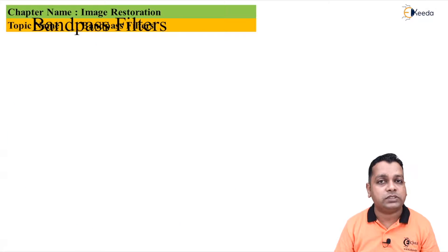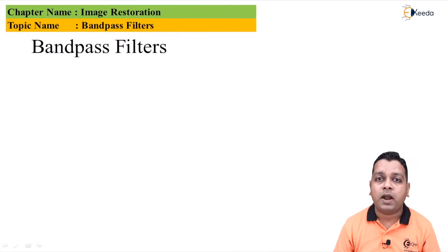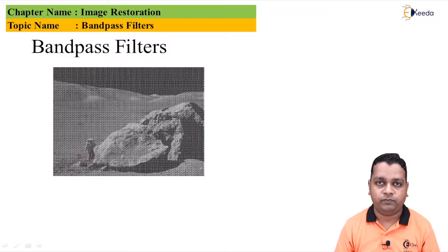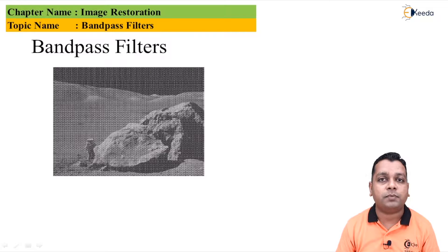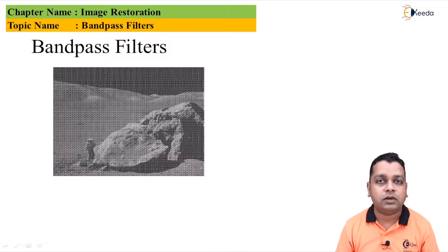However the band pass filtering is quite useful in the isolation of the effect onto the image of the selected frequency bands. Here for band pass filters we have the example. In the previous lecture we have addressed this image. This is the image that has been affected because of the periodic type of the noise. Throughout this image you can see a similar kind of the noise pattern with respect to the number of rows and number of columns.